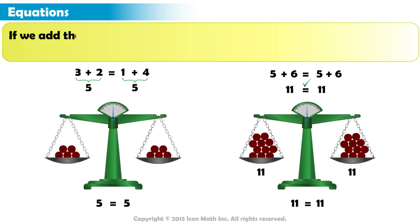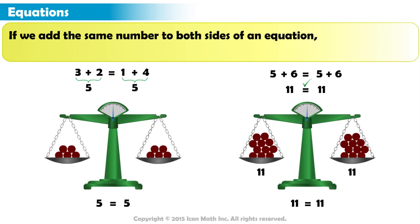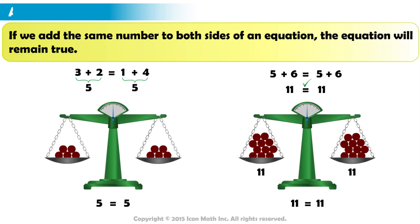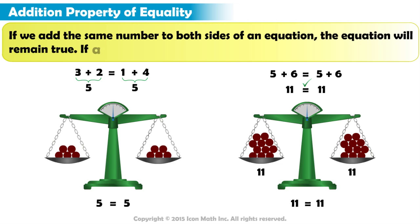Notice, if we add the same number to both sides of an equation, the equation will remain true. This is the addition property of equality. If A equals B, then A plus C equals B plus C.